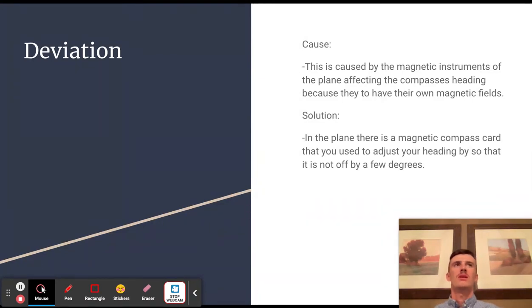The magnetic compass runs off the magnetic fields of the earth, and the magnetic instruments in our plane have their own magnets inside them. They can actually throw off our compass, so each plane has a card.